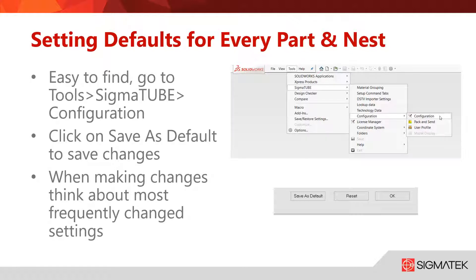You will know this is your overall configuration by the save as default button at the bottom of the window. After you make your changes and set up your preferences on each tab simply hit save as default and exit the menu by hitting OK. Sometimes it's best to find out your defaults through trial and error and what settings you seem to turn to the most.